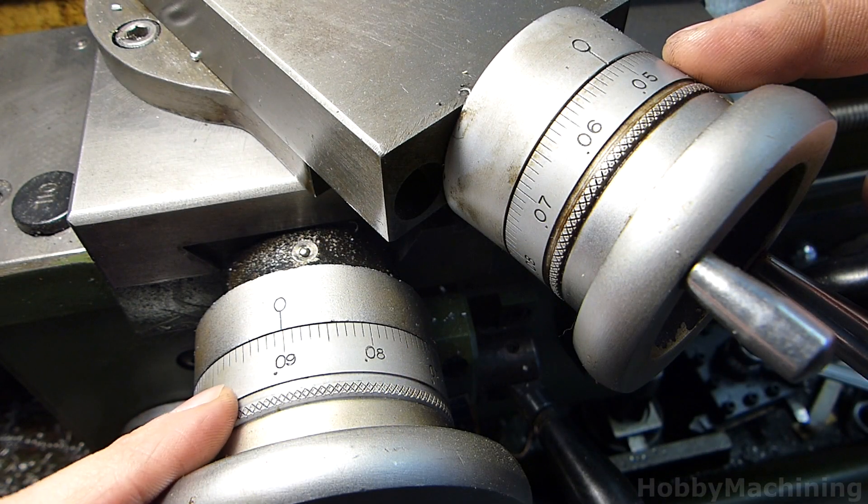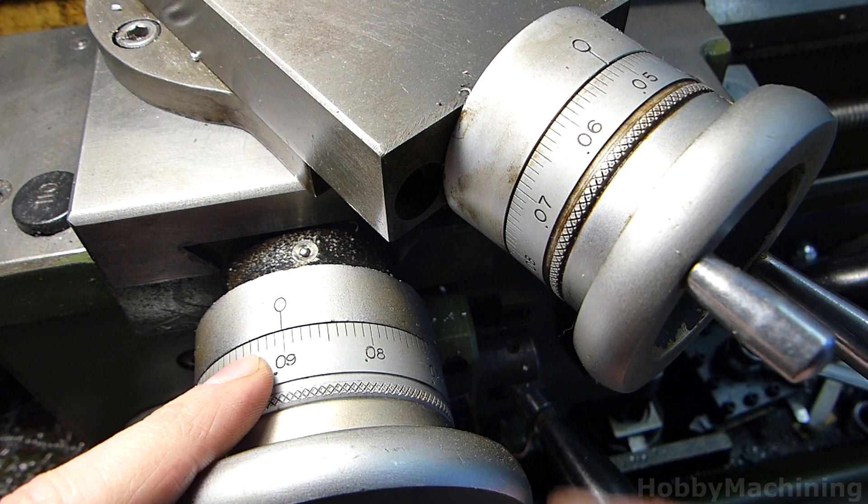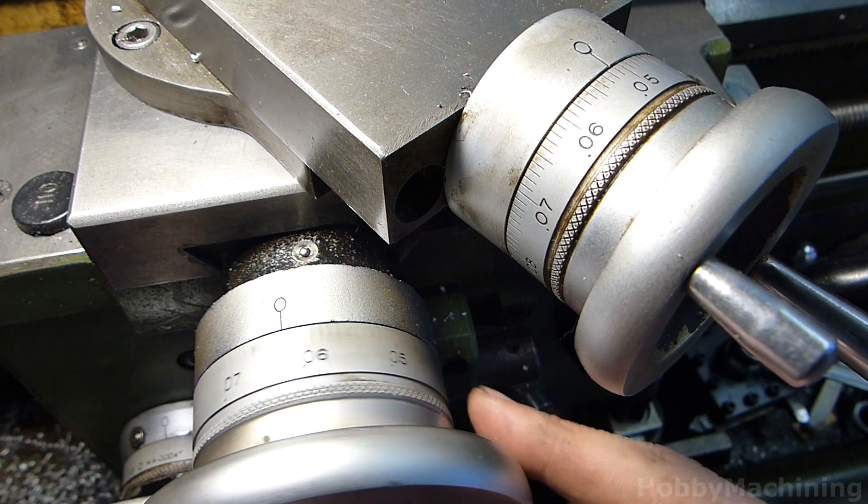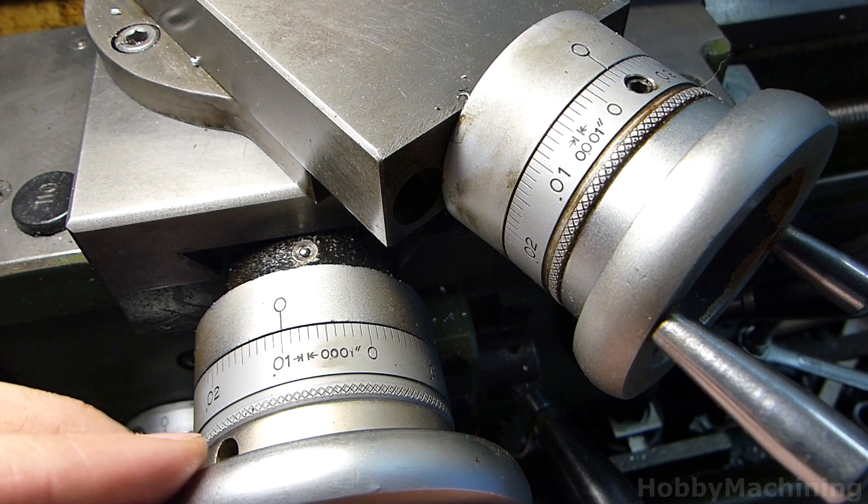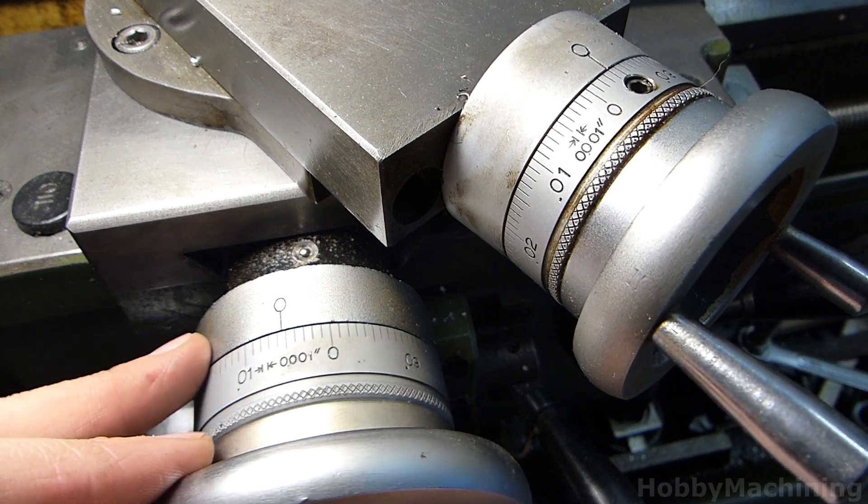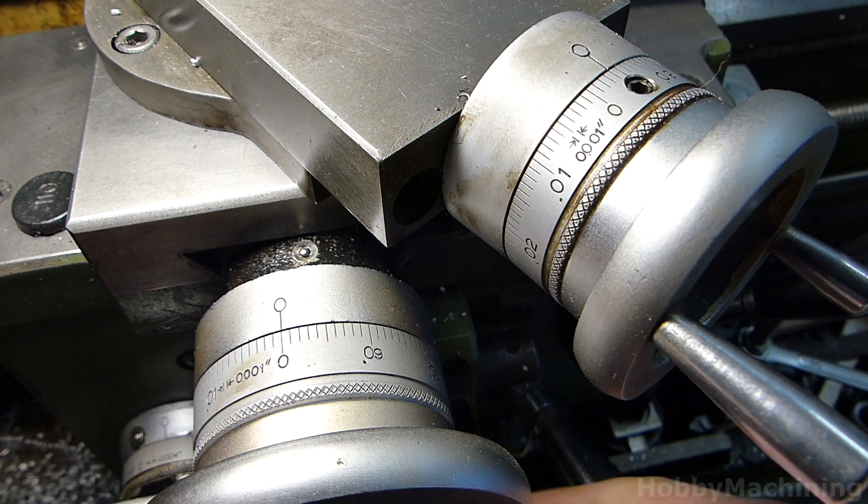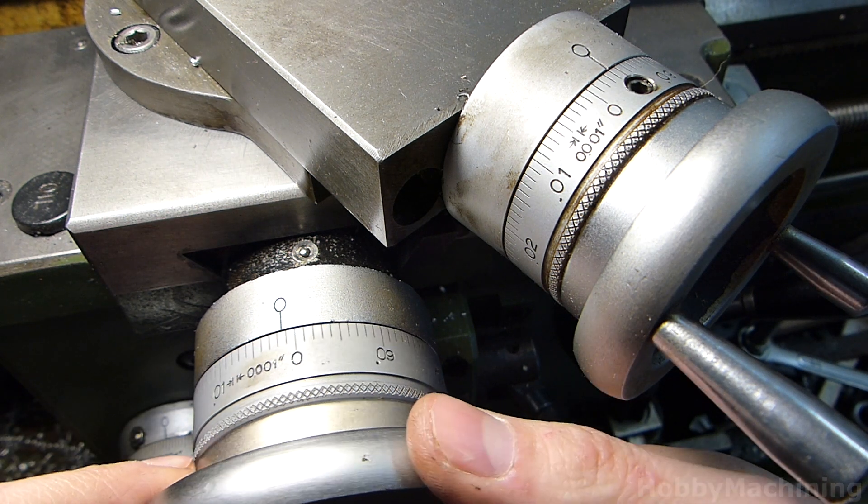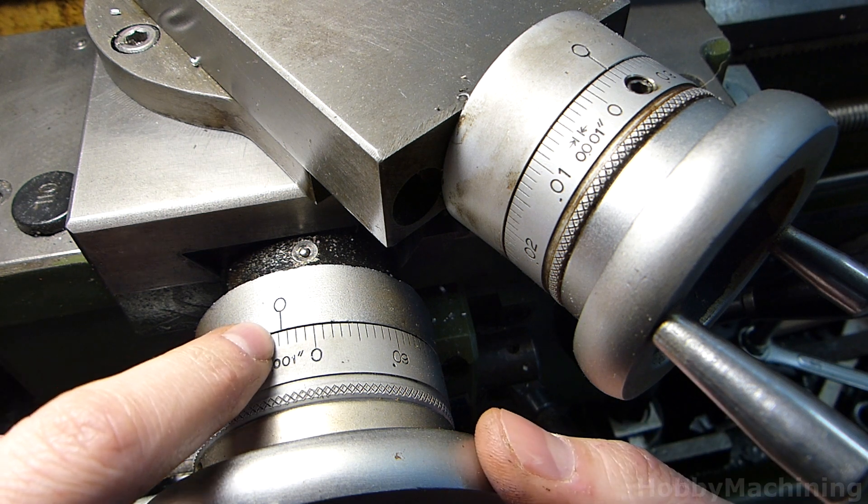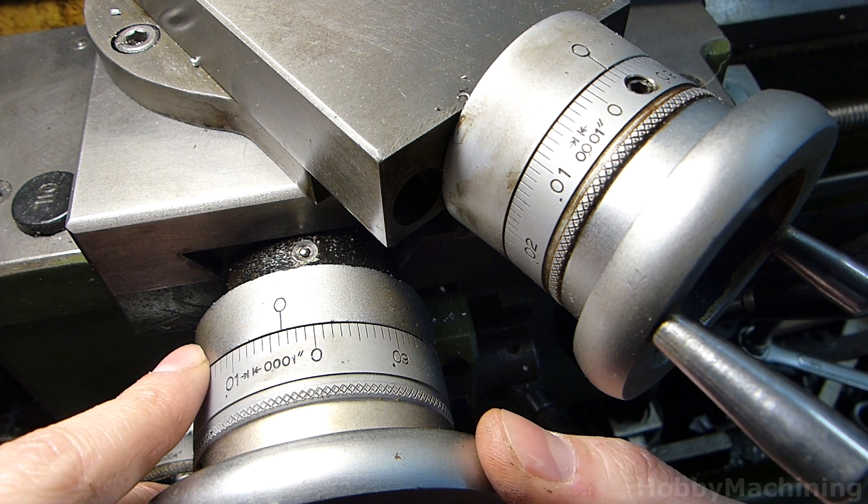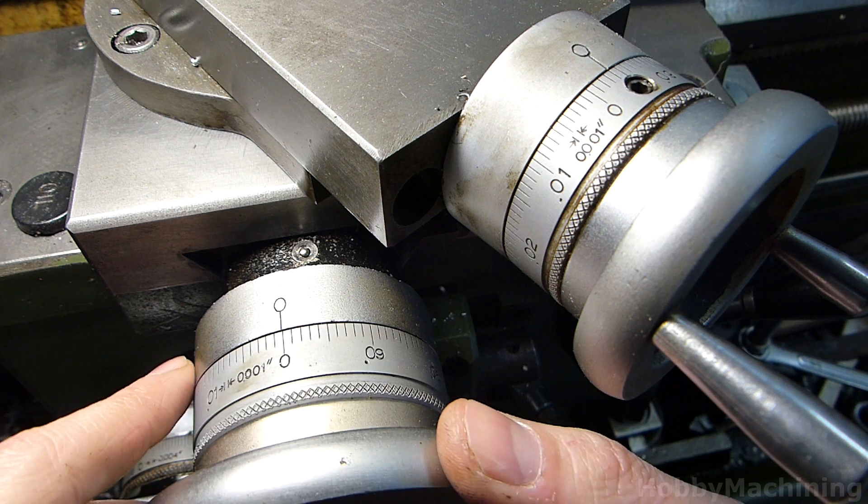Up higher on the cross slide and the compound, we are graduated in one thousandths of an inch, as indicated right here. If we move in one direction and stop on zero, then we can move it until it engages and we can see that we have about a little less than four thousandths of an inch backlash.